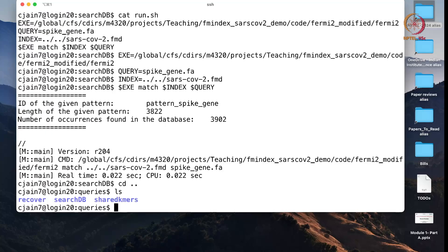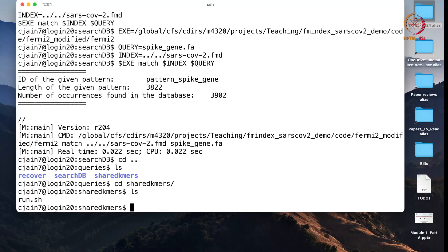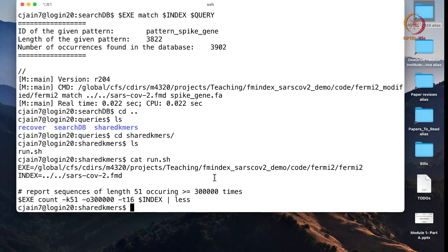Let me show you another type of query which this tool can immediately answer. In this search, what I want to do is I want to look at sequences of length 51, which are occurring in at least 300,000 times in the database.